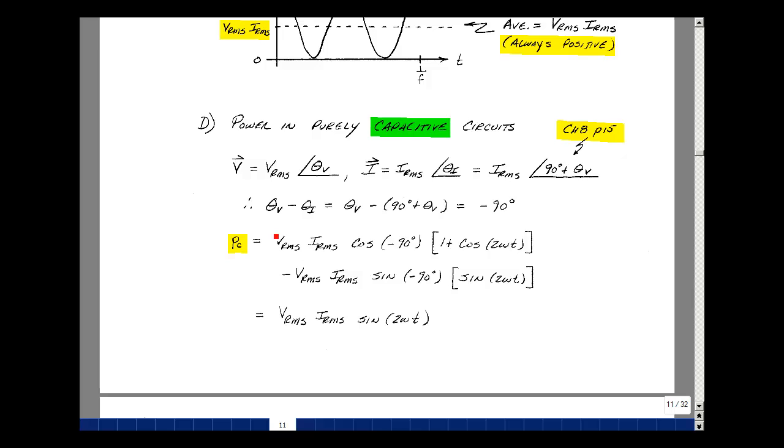In other words, the I, C, and E. So the difference of the voltage minus the current would be the theta of the voltage, and minus 90 degrees plus theta sub v. And that's equal to minus 90 degrees. So in our definition for power absorbed, we now have the cosine of minus 90, and then the sine of minus 90. But the cosine of 90 plus or minus is equal to zero.